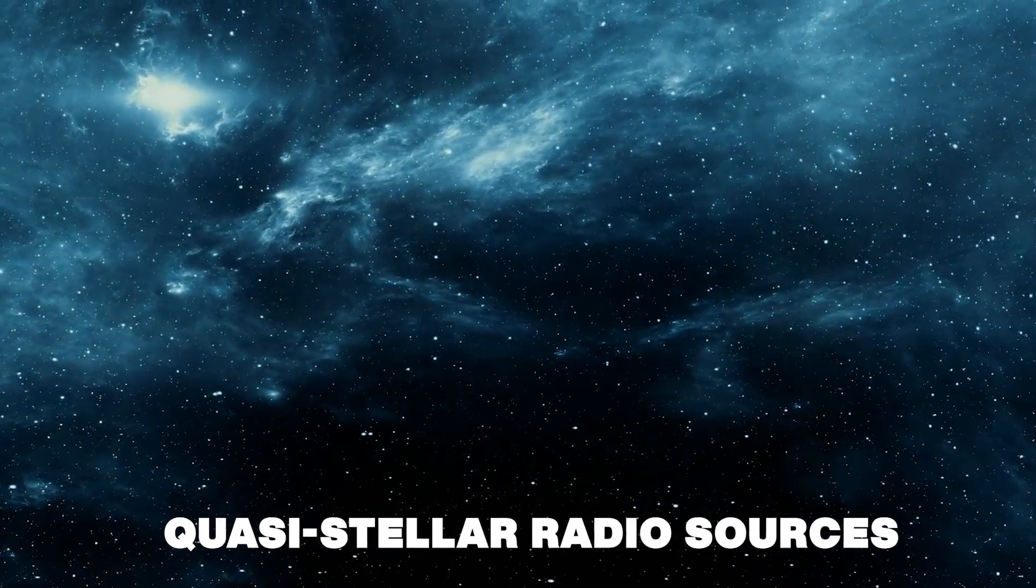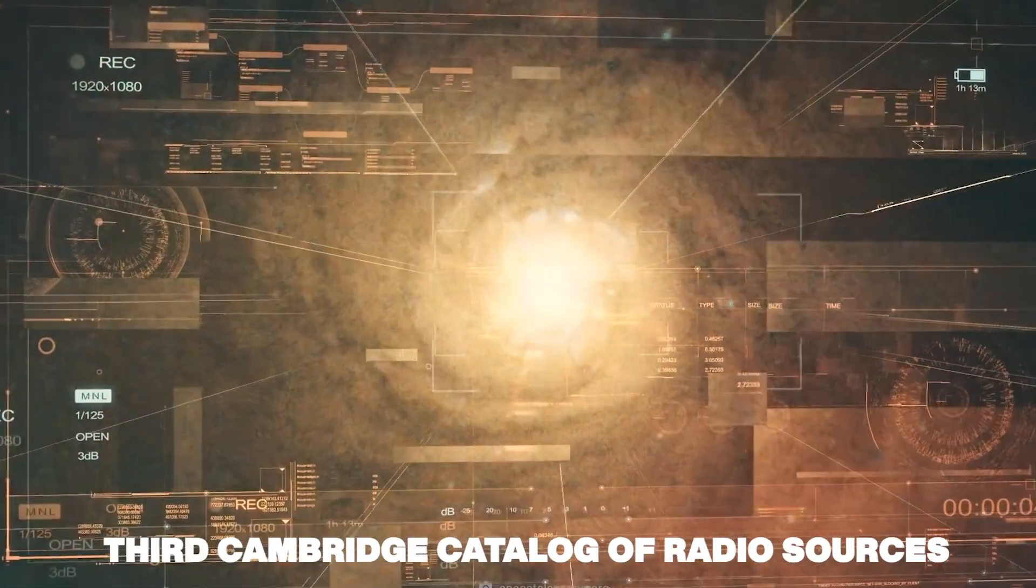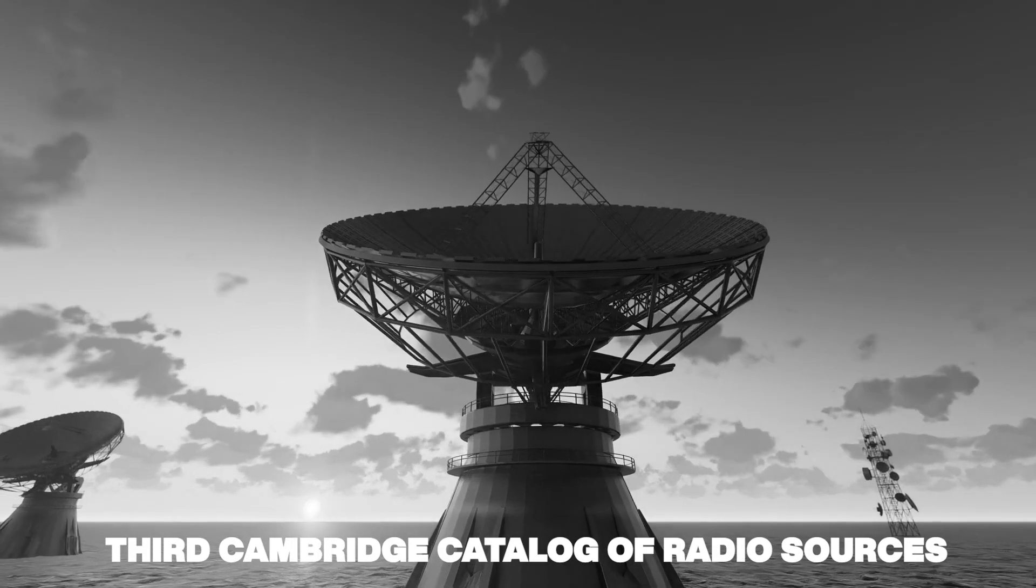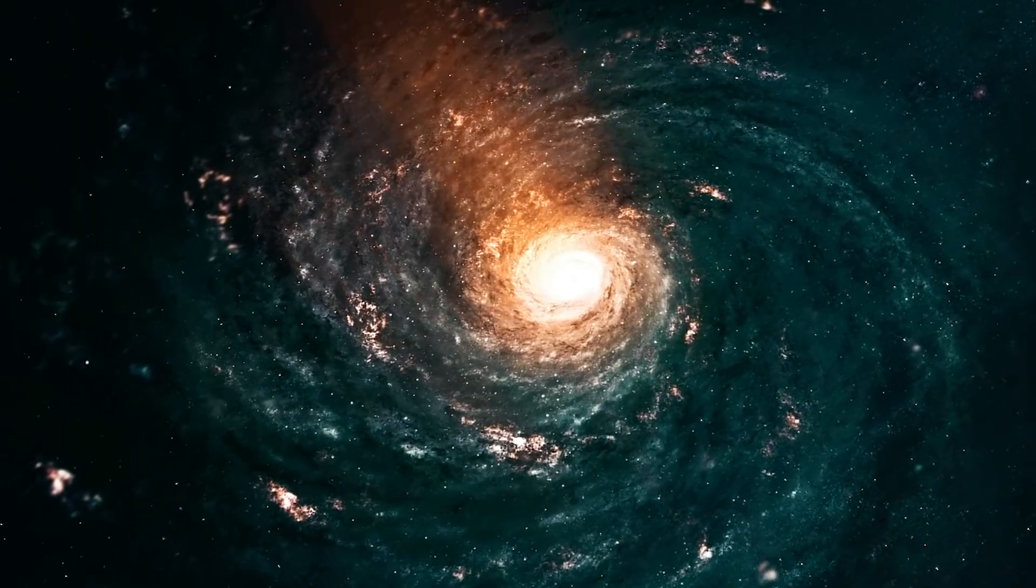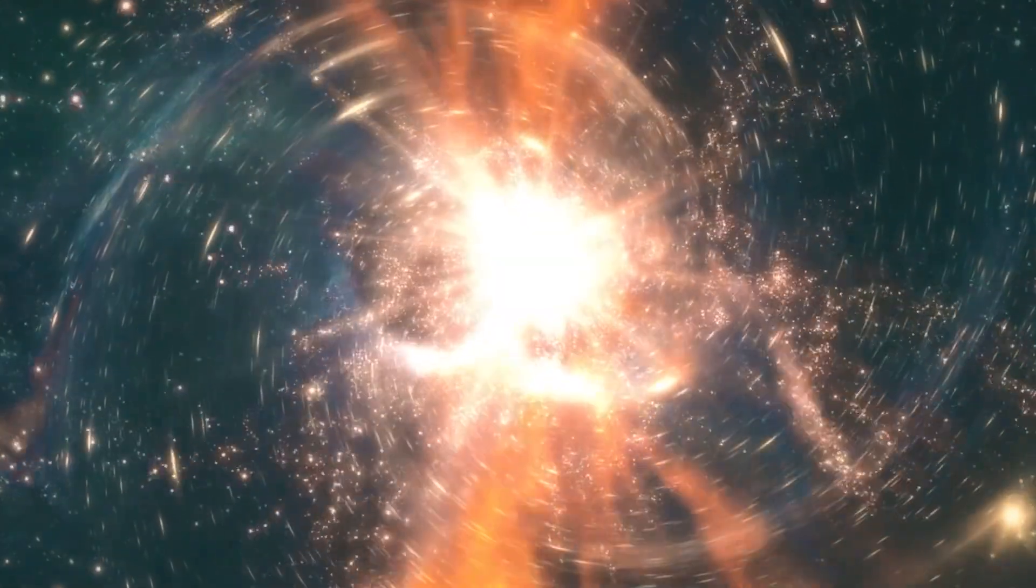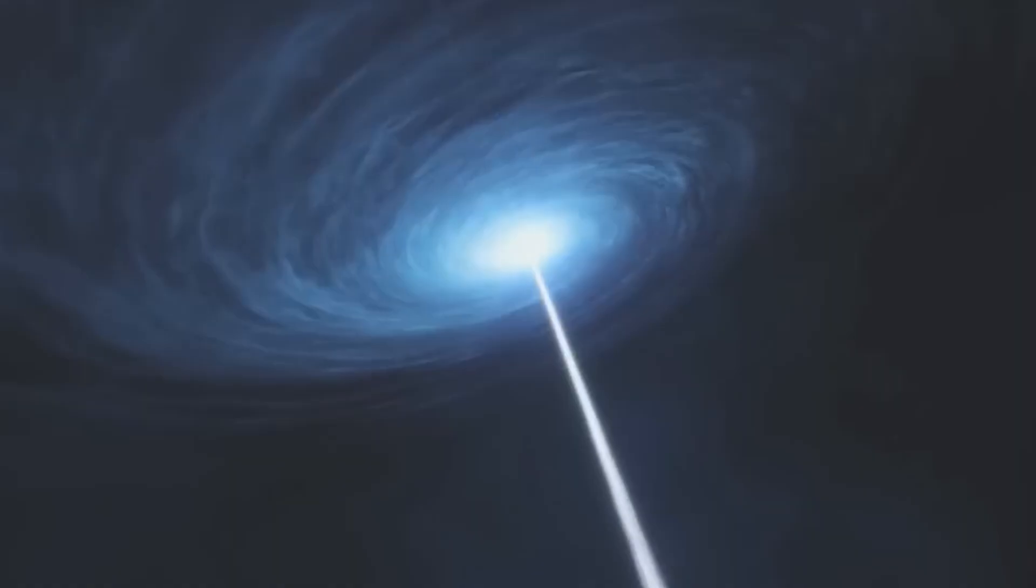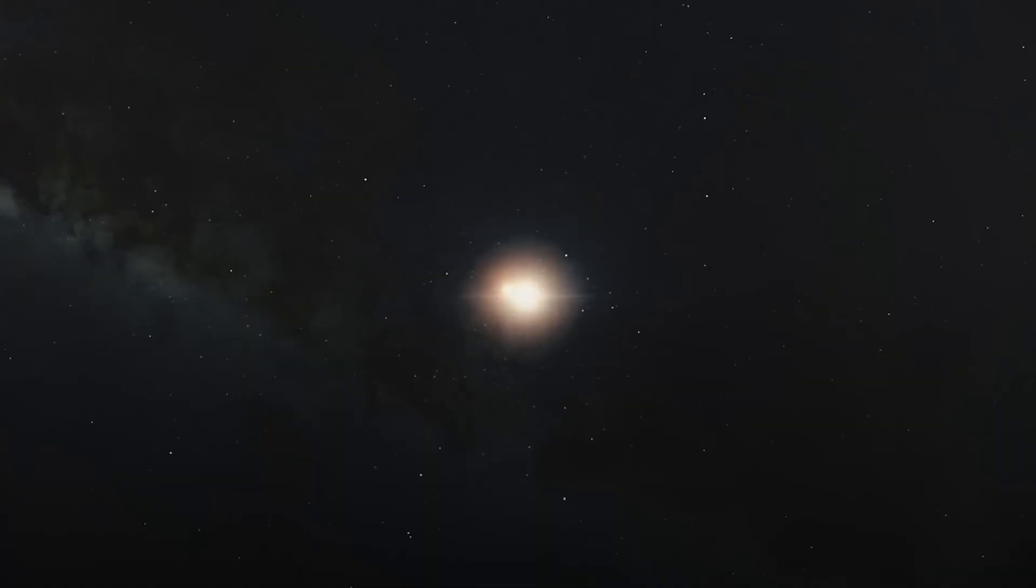They were called quasi-stellar radio sources, and featured in the third Cambridge catalogue of radio sources that came out in 1959. It was hard not to believe that these bright objects weren't stars. They shared some similarities, and there was nothing else we knew at the time that could shine that bright. Photographs taken of its optical spectra also presented a challenge. It showed emission lines at wavelengths that were impossible to see in other celestial bodies already discovered.